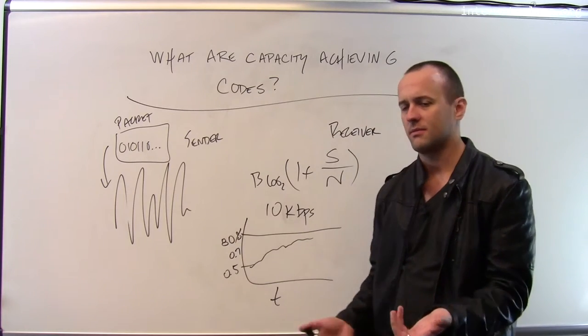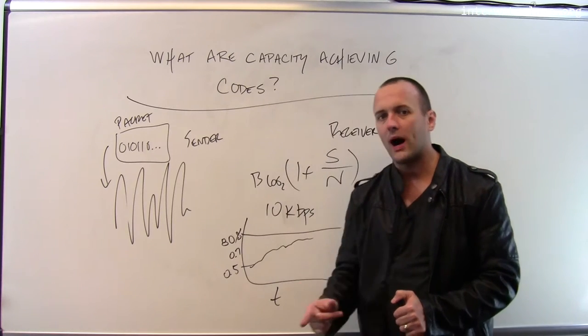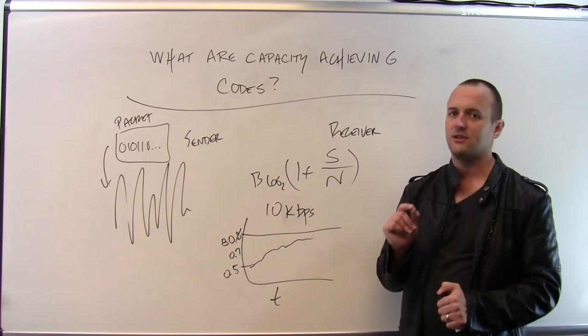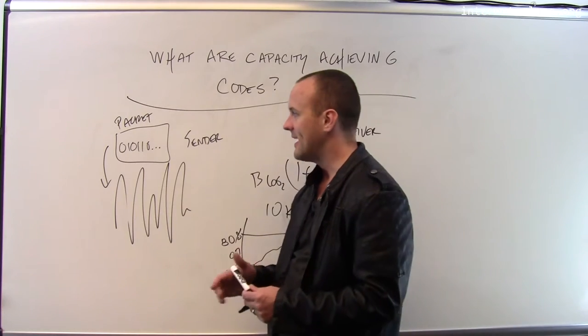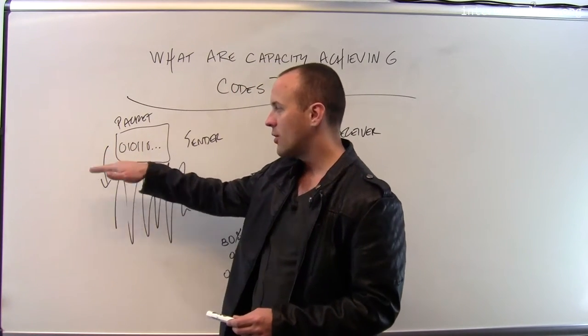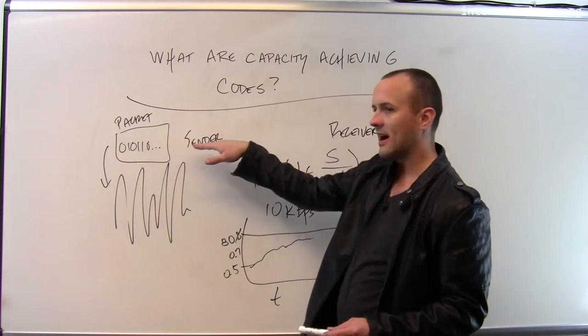One of the families is something called turbo codes. There's only one problem with our current set of capacity achieving codes that causes them to not necessarily be deployed in practice. And that's the fact that they only achieve the channel capacity once they operate over a lot of data.